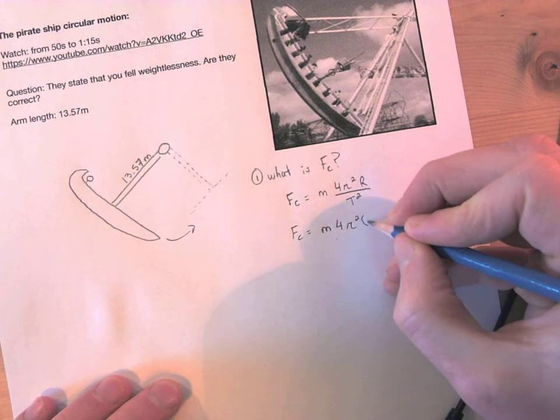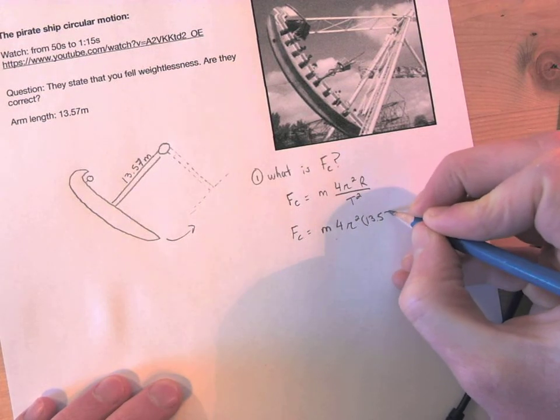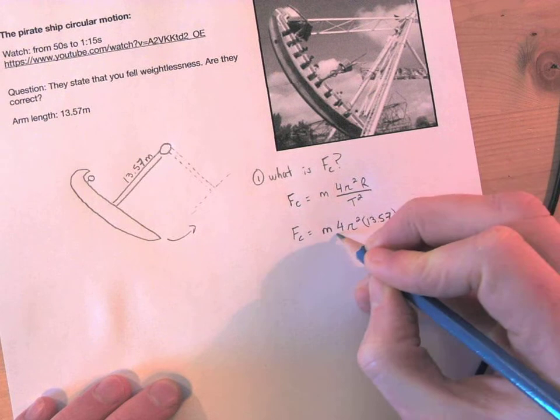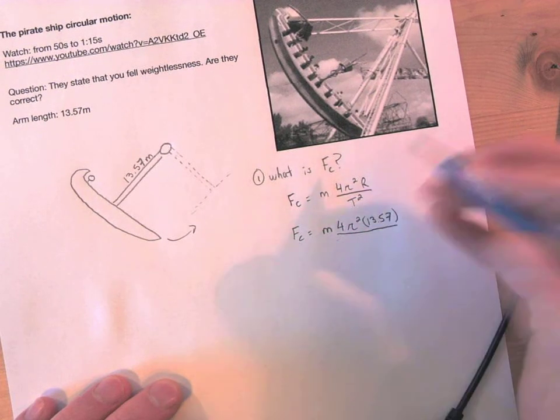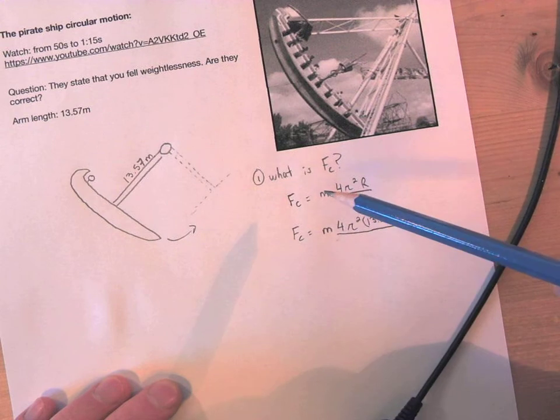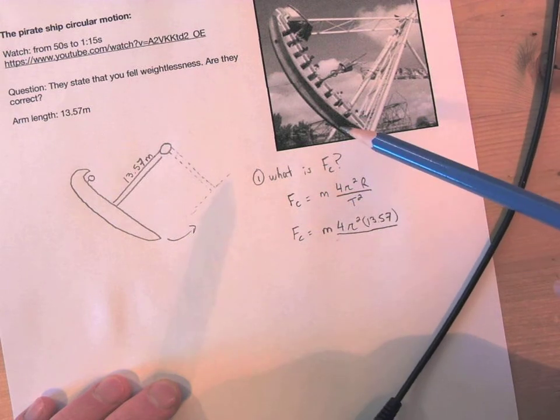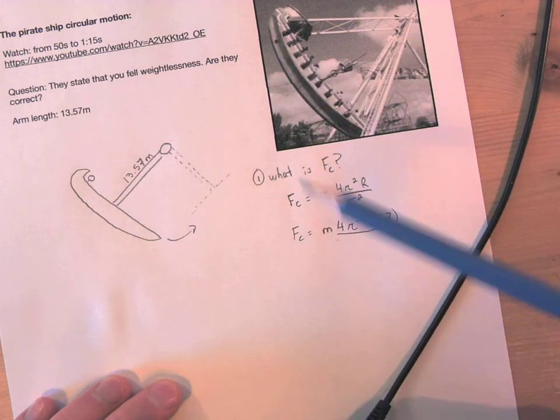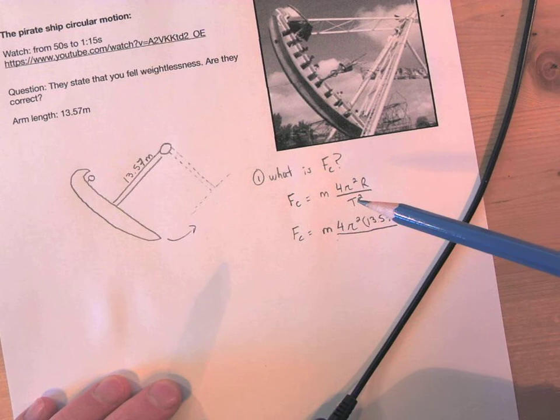So let's just make it anything. And then we have 4 pi squared, and then our radius is 13.57, so I'm going to plug that in there. And then all over t squared.